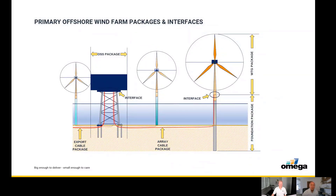A developer will source the contractor through experience and expertise using a bidding process and a tender process. The packages shown here are broken down to define the wind turbine package — the turbine generator — which the contractor would usually supply including the blades, the generator, the tower and the flange connection right down to the transition piece, known as a TP, at the top of the foundation package.